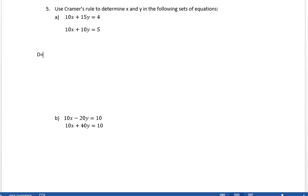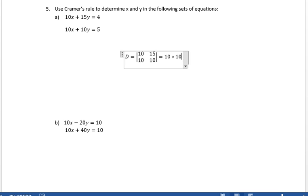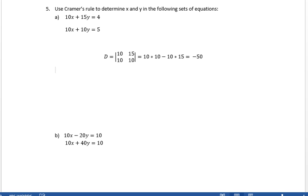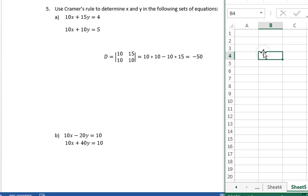What's the determinant? The determinant is 10 and 15, 10, 10, which is 10 times 10 minus 10 times 15, which is minus 50. Equals 10 times 10 minus 10 times 15 equals minus 50.